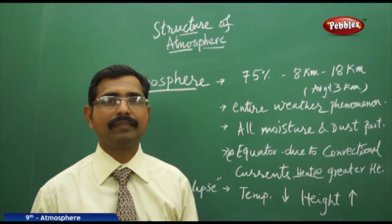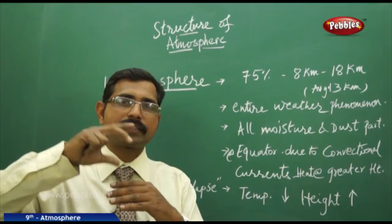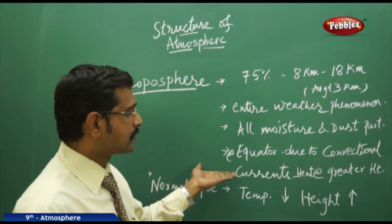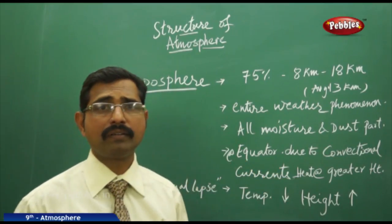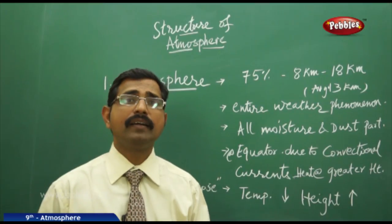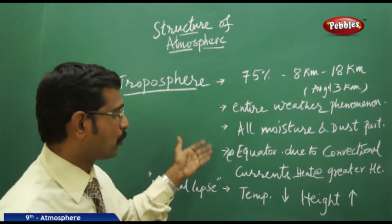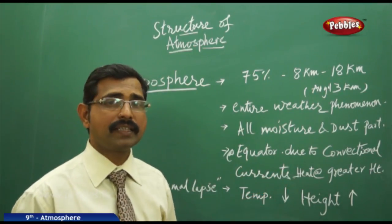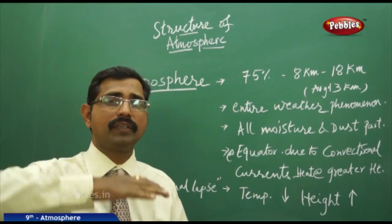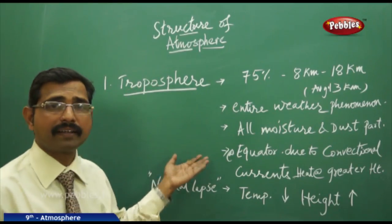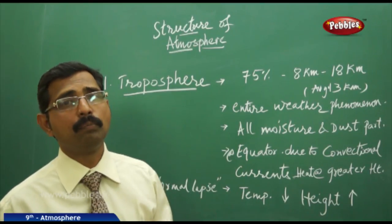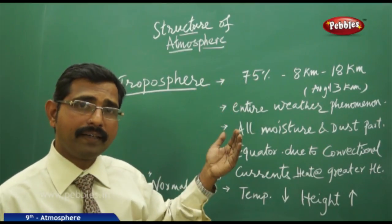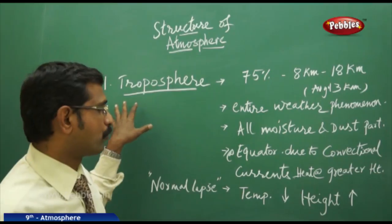The thickness of the troposphere is greatest at the equator — 18 km — compared to only 8 km at the poles. This is because heat from the equator is transported to greater heights due to convectional currents. These convectional currents cause the troposphere layer to be much thicker at the equator than at the poles.